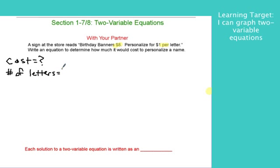In science, we call this the independent variable. You get to decide how many letters you want. The cost depends on the number of letters. This is dependent and independent variables. I know you've talked about that before.